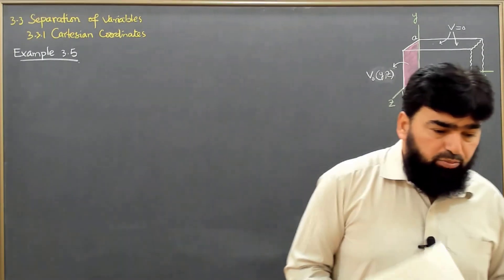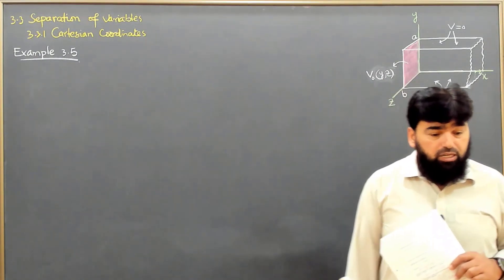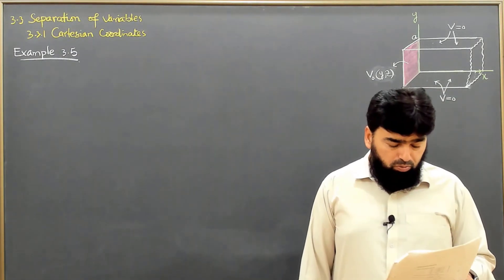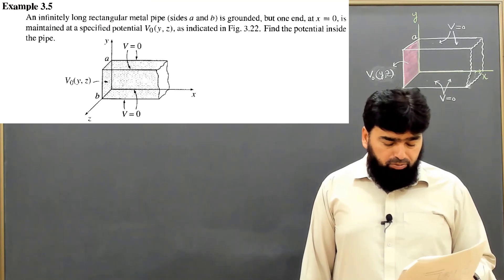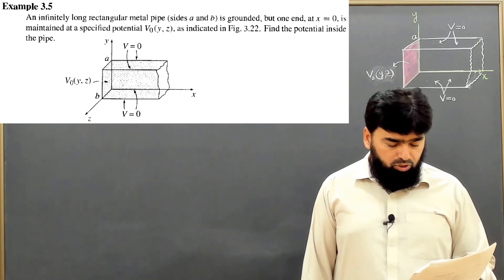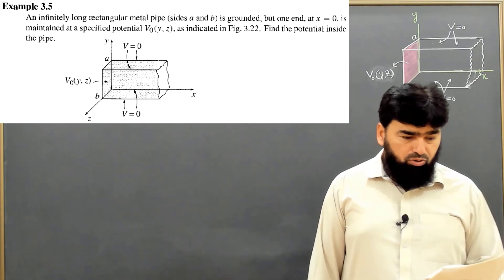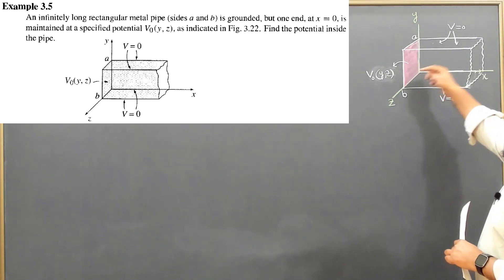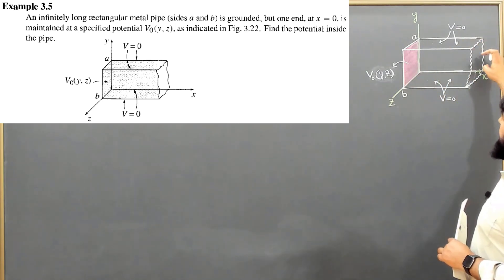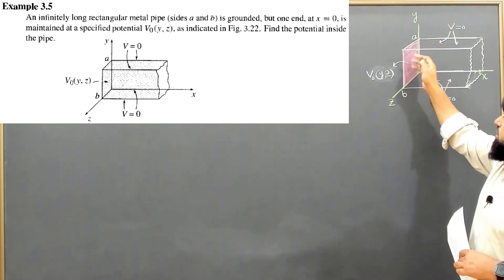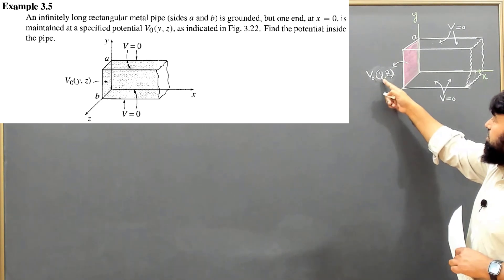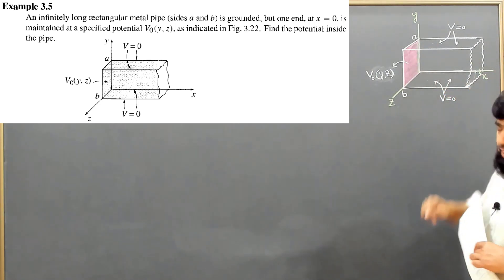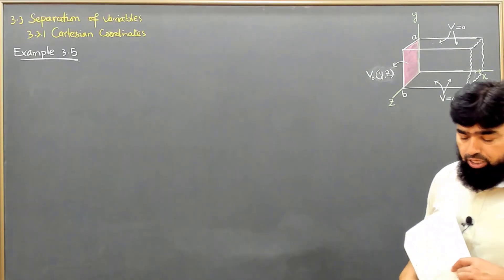We are going to solve Example 3.5, which is a three-dimensional problem. An infinitely long rectangular metal pipe, grounded on all sides labeled a and b, has one end at x equal to zero maintained at a specified potential V naught of Y and Z. The potential extends along the Y and Z axes, and we need to find the potential inside this rectangular pipe.